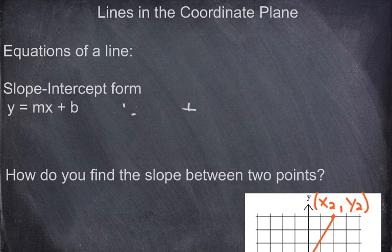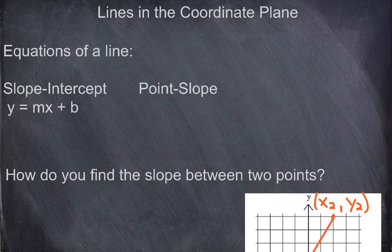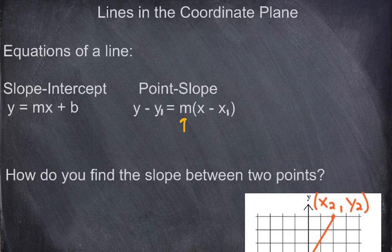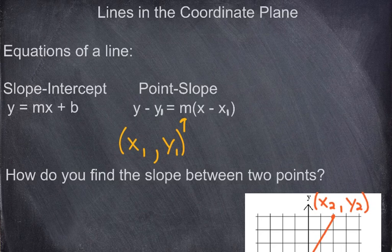The second one is called point-slope. The point-slope equation is y minus y1 is equal to m times x minus x1. It's called point-slope because we know the slope, and we know the point x1, y1. So if you know a point on your line and the slope, we plug it into point-slope.